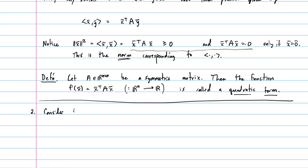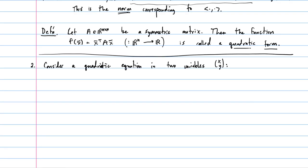Consider a quadratic equation in two variables x and y. The quadratic equation is: a x squared plus 2b xy plus c y squared plus dx plus ey plus f equals 0. For a quadratic equation in two variables, you have three quadratic terms — the x squared term, the xy term, and the y squared term — plus two linear terms in x and y, and a constant f.